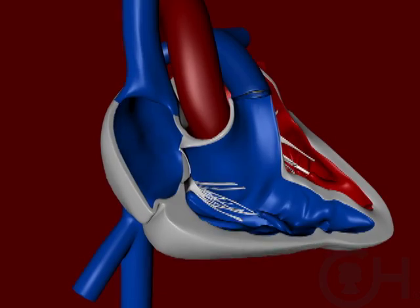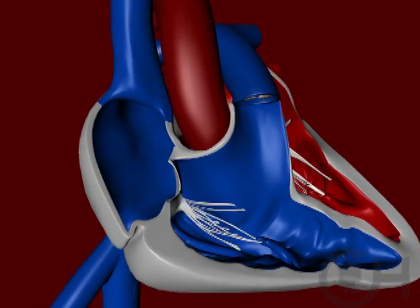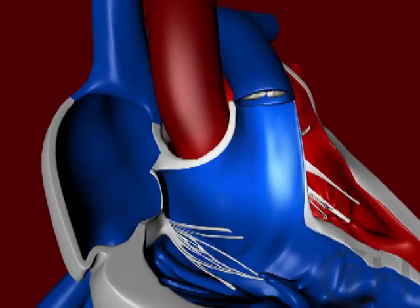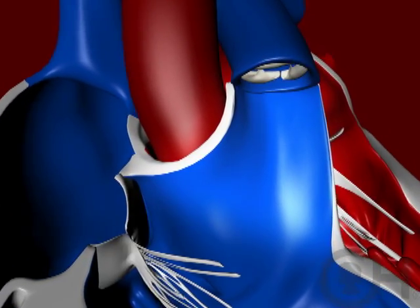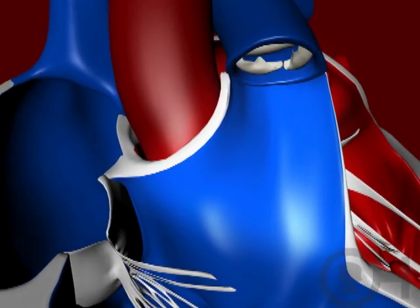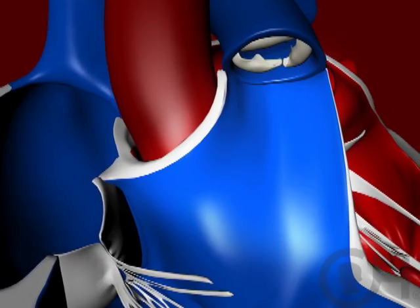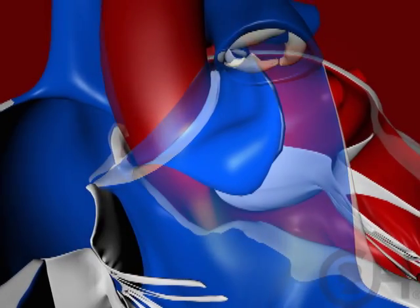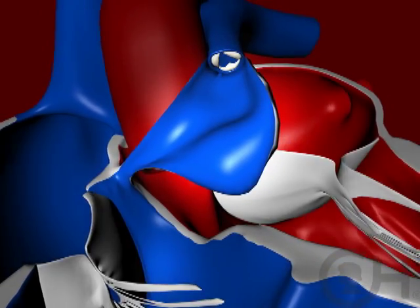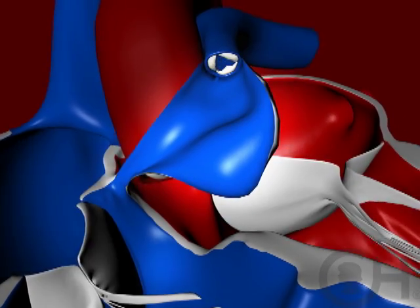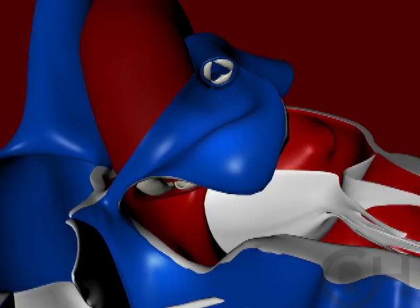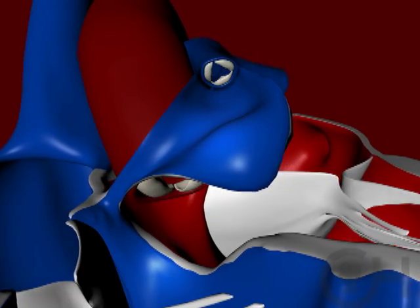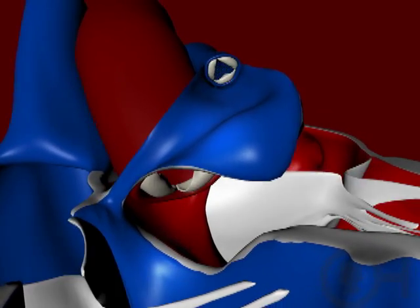The problem with Tetralogy of Fallot is that the orientation of the muscle on the inside of the heart is abnormal. The septum, the partition between the two ventricles, forms slightly more anterior or frontwards than it should. As that tissue that sits beneath the two great vessels is positioned in front of the pulmonary artery, it results in the four findings of tetralogy.